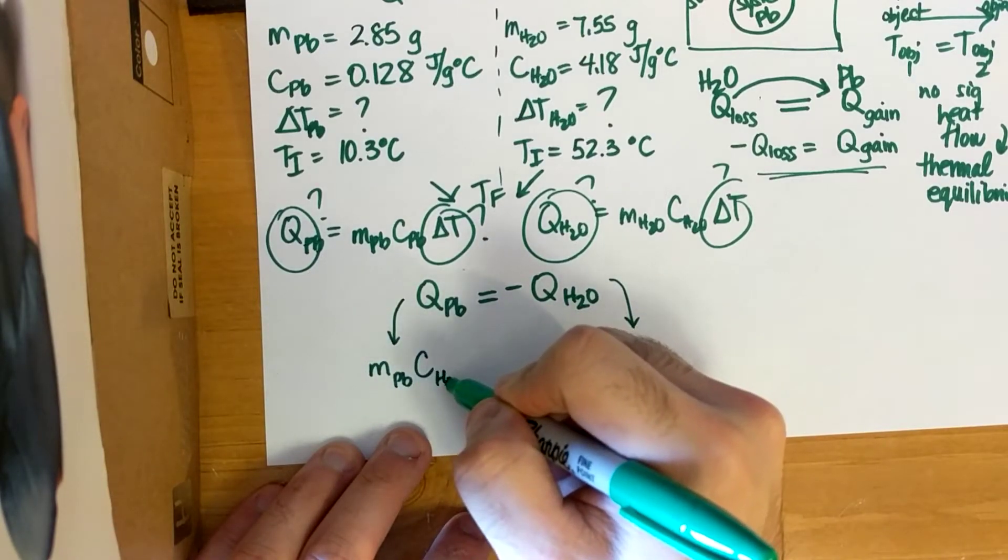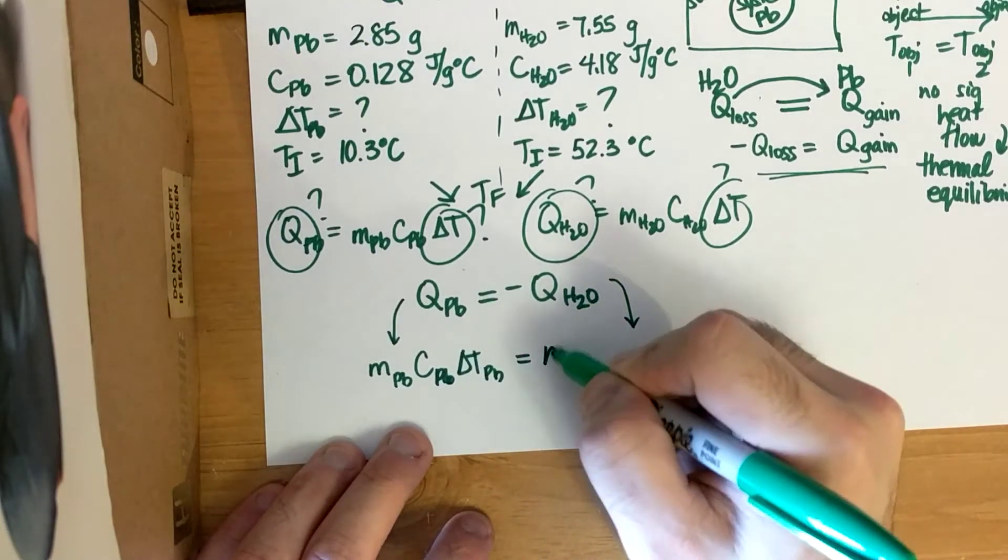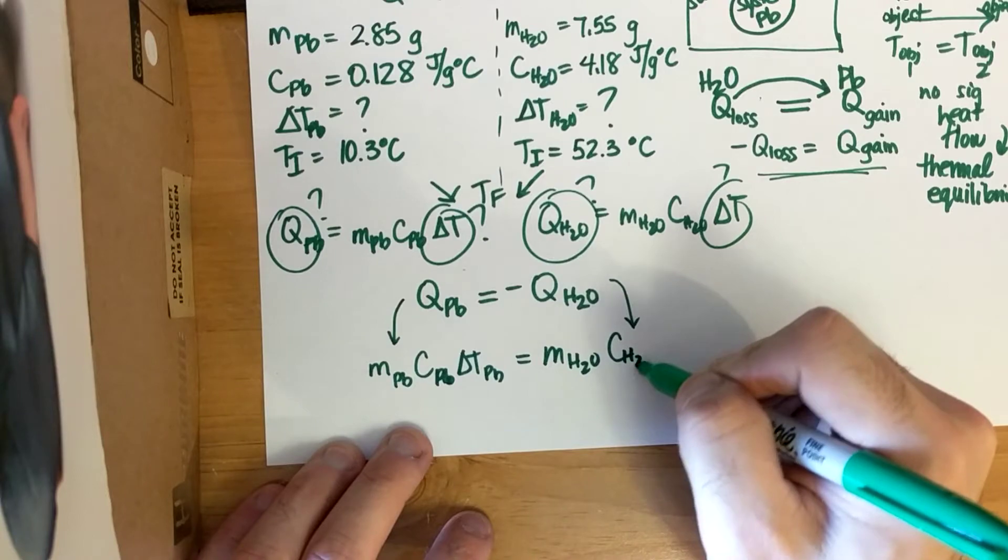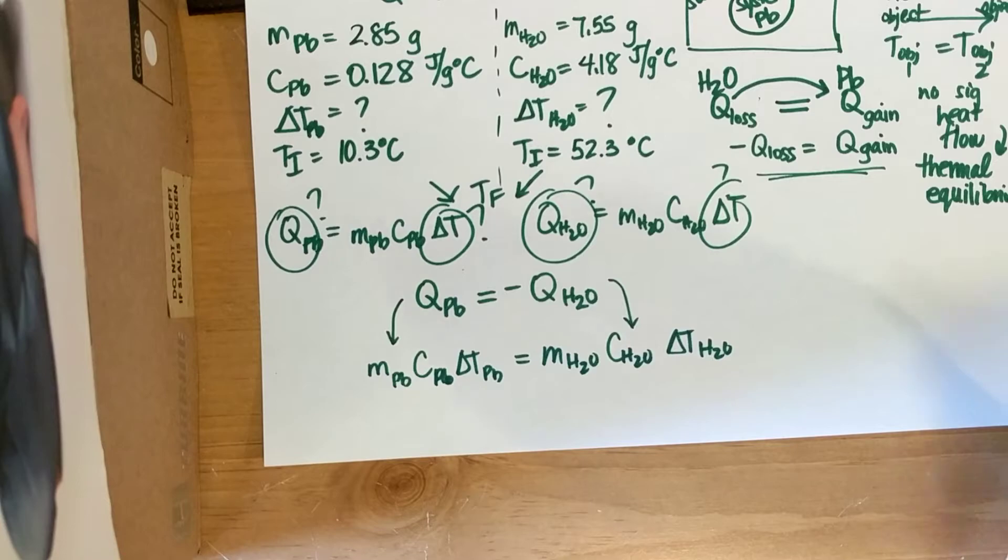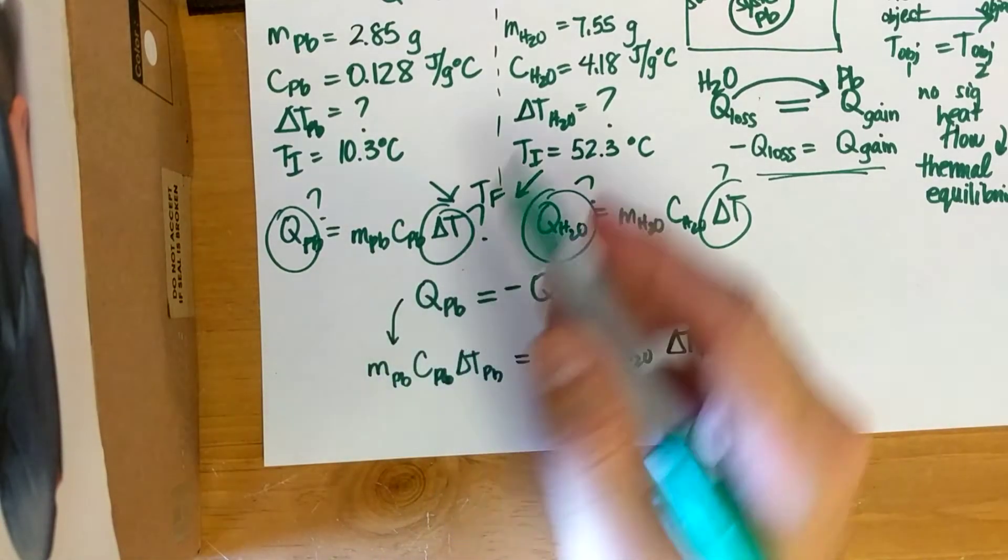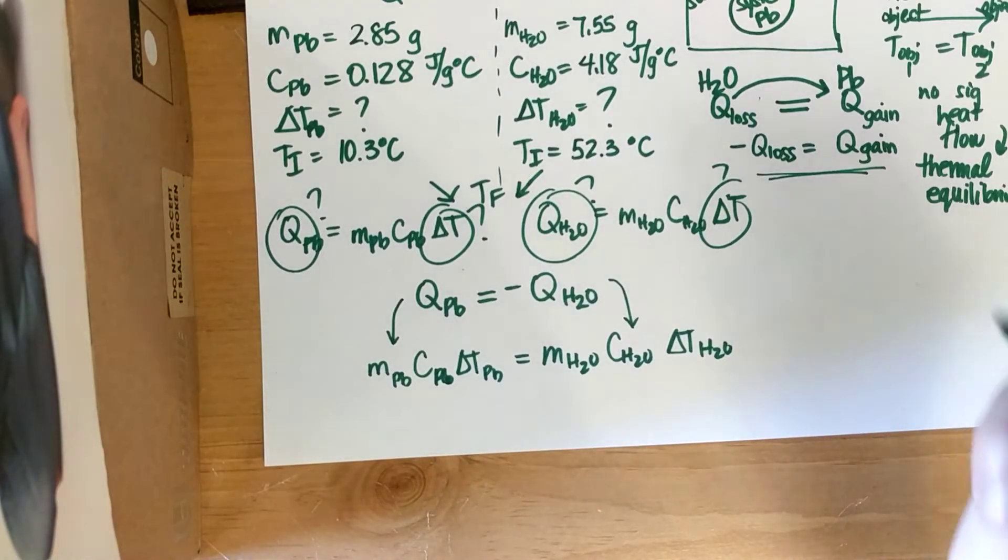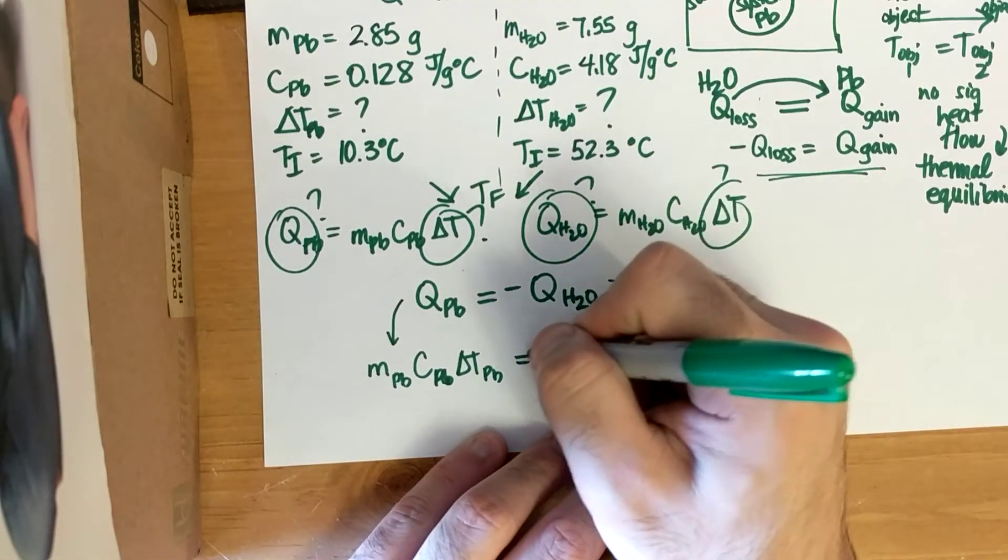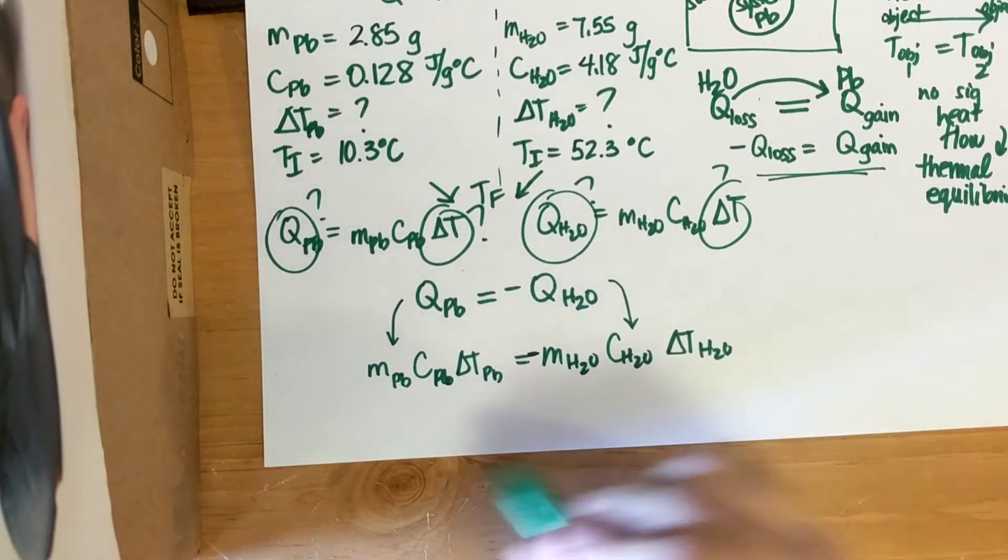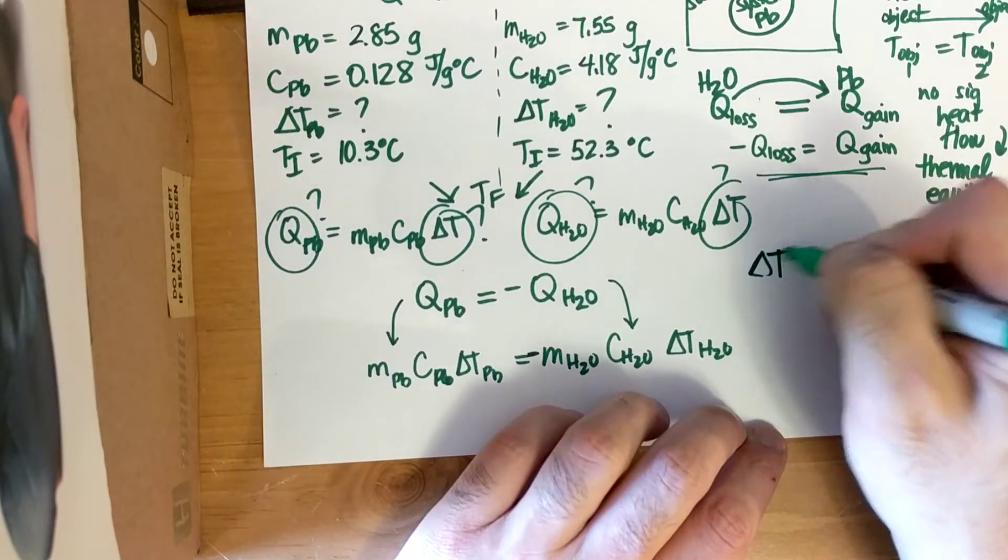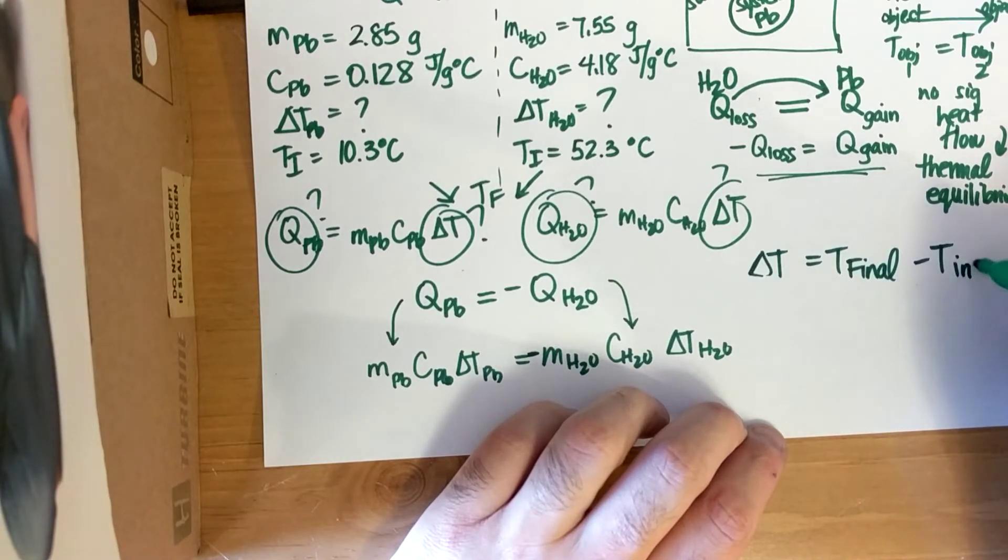So, M lead, C lead, delta T lead is equal to M H2O, C H2O, delta T H2O. Right? Because if Q is equal to this, I'm just plugging it in. That means these two must be equal to each other. And then don't forget for sign convention, this is a minus sign because this whole thing is losing energy. And I know all these values. And then don't forget that delta T is equal to T final minus T initial.